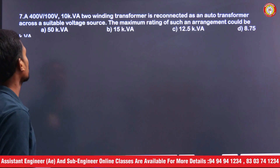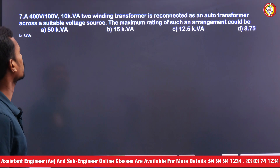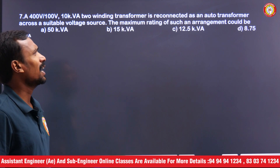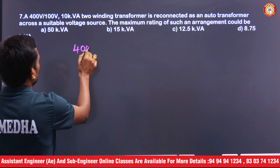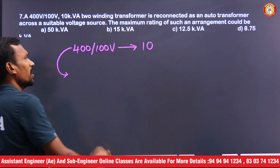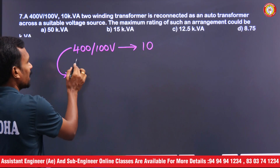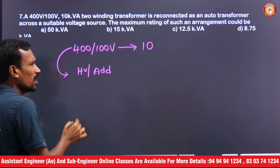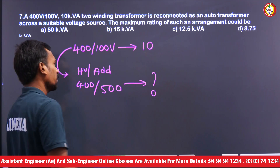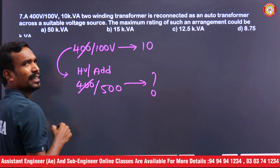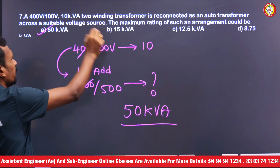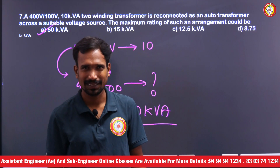The last question on auto transformers: a 400 by 100 volts two-winding transformer is reconnected as an auto transformer from a suitable voltage source. What is the maximum rating? Initially rated at 10kVA, to get maximum rating the auto transformer should be high voltage by addition: 400V on one side and 500V on the other. For 100V it is 10kVA, so for 500V the answer is 50kVA. The maximum rating is 50kVA.